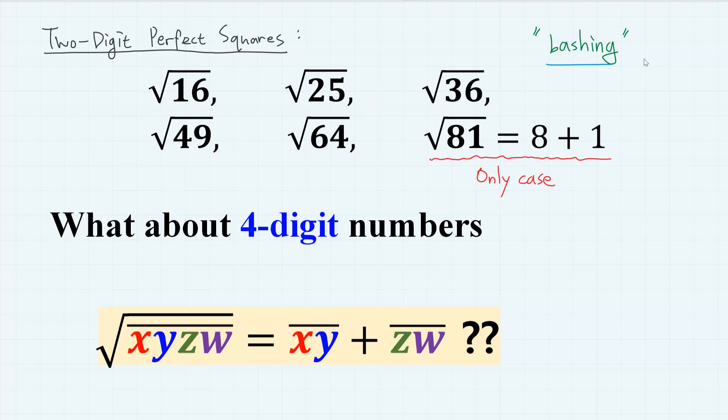In that spirit, here I will use a similar method to find all four-digit numbers x, y, z, w satisfying the property: square root of xyzw equals xy plus zw. Here I used bar over the characters to indicate that xy with a bar means two-digit number with tens digit x and ones digit y, not the product of x and y.